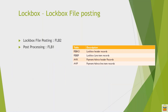For file processing, we use transaction code FLB2 to upload the lockbox file. For post processing, we use transaction code FLB1 — similar to how post processing works in EBS. If you want to do post processing for the lockbox, you can go with FLB1.